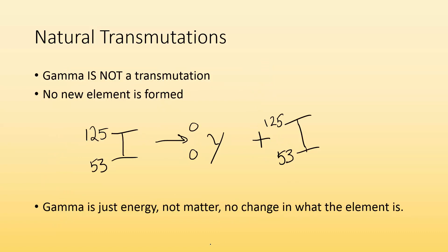Gamma is not a transmutation. No new element is formed. If I had iodine-125 and its nucleus was really excited, it gave off a gamma particle. You can see gamma has no charge, no mass, so the element stays the same. The mass and charge don't change. It just gives off energy. Gamma is just energy, not matter, so no change in the element.